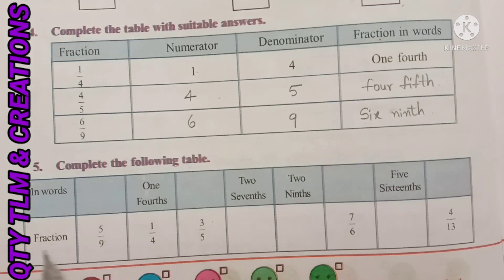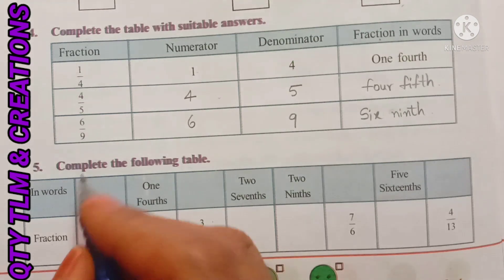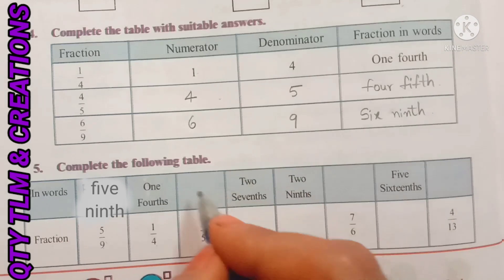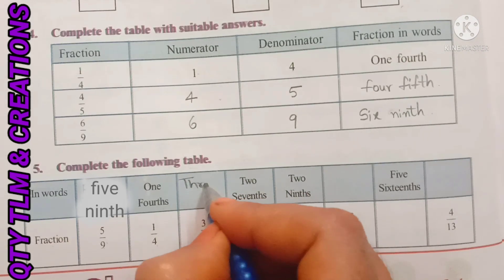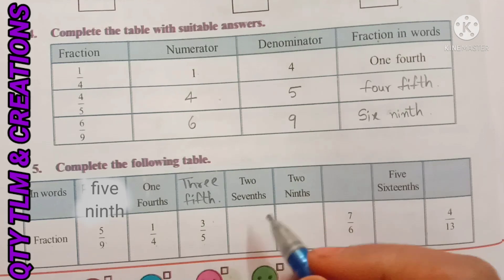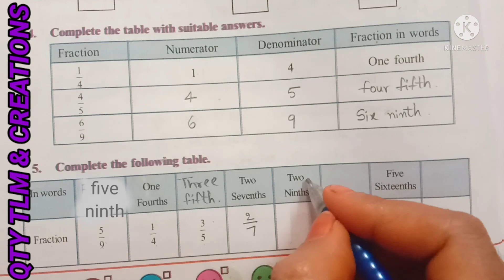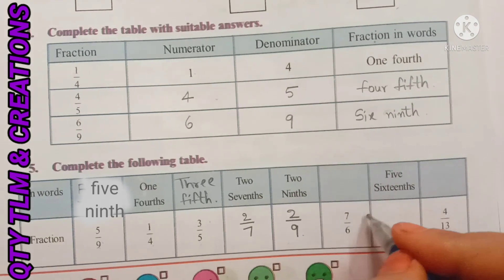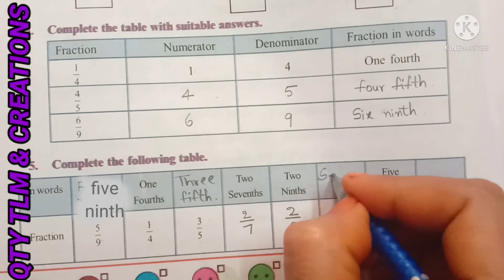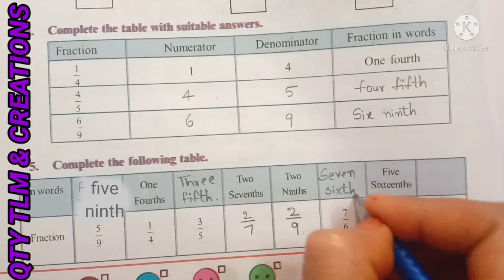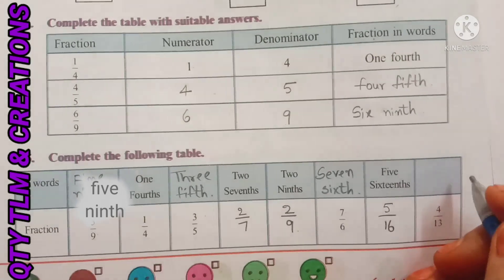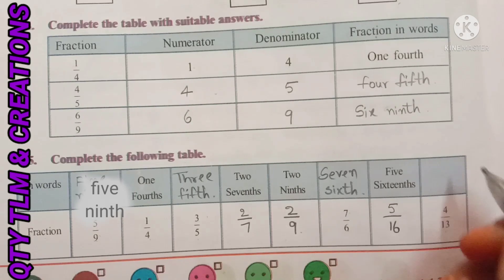Next question: complete the following table — In words and Fraction. 5 by 9: five ninth. Next, one fourth: 1 by 4. Next, 3 by 5: three fifth. Next, two sevenths: 2 by 7. Next, two ninths: 2 by 9. Next, 7 by 6: seven sixth. Next, five sixths: 5 by 6. Next, 4 by 13: four thirteenth.